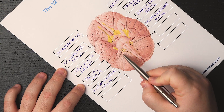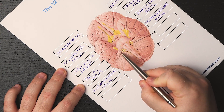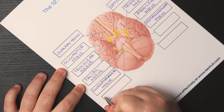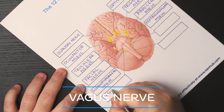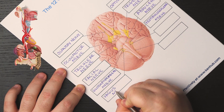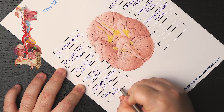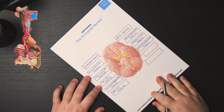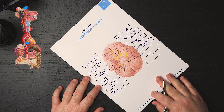Continuing inferiorly, you can see this nerve here, which we are going to label as cranial nerve 10, or the vagus nerve. This is a mixed nerve involved in several processes such as gland secretion, peristalsis, phonation, and taste, as well as the visceral and general sensation of the head, thorax, and abdomen.